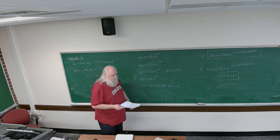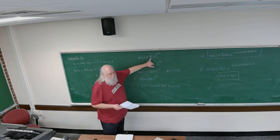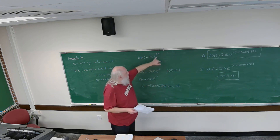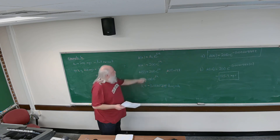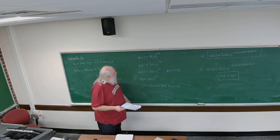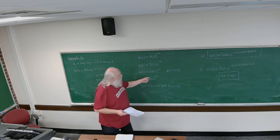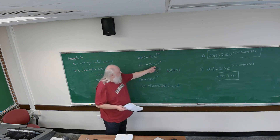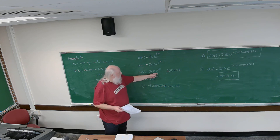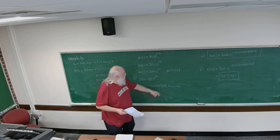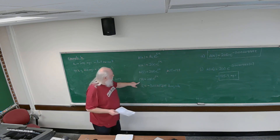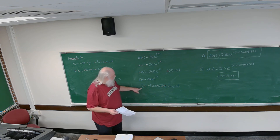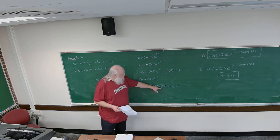Our exponential decay model is a(t) equals a sub zero times e to the kt power, where k is the decay rate. We put in 200 for a sub zero, and at t equals 5 the amount is 194 milligrams. So 194 equals 200 times e to the 5k power. Solving for k, I get a decay rate of minus 0.00609184.